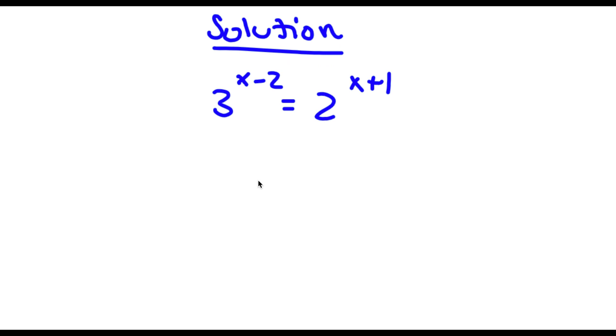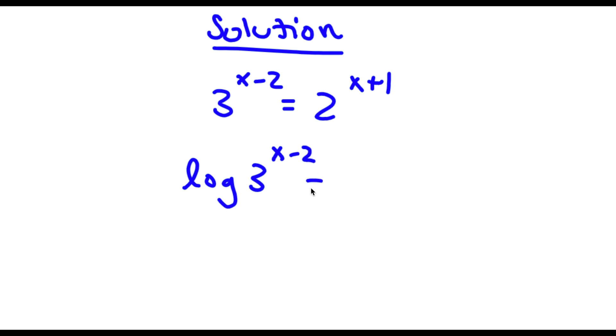Now I'm going to take the log on both sides. So now I have log of 3 to the power of x minus 2 is equal to log of 2 to the power of x plus 1.